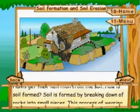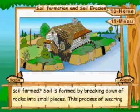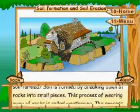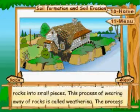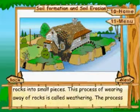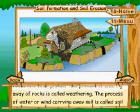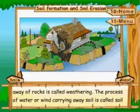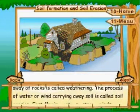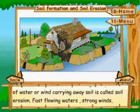Soil is formed by the breaking down of rocks into small pieces. This process of wearing away of rocks is called weathering. The process of water or wind carrying away soil is called soil erosion.